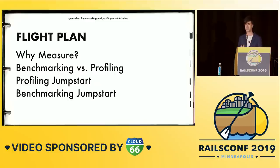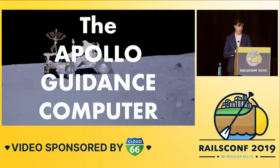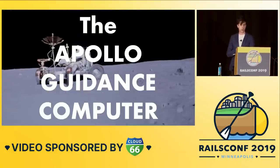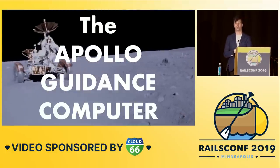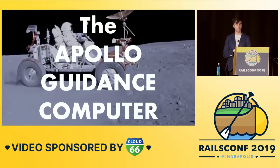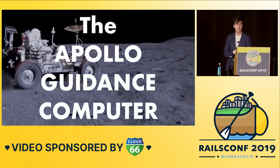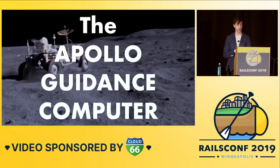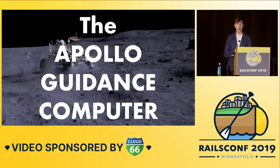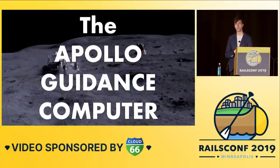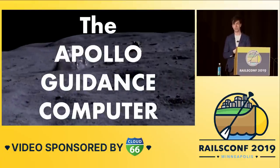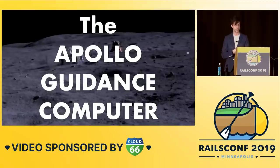And although this is RailsConf, nothing I'm going to be presenting here is specific to Rails. I want to begin with a story about one of the most famous computing projects of all time, the Apollo Guidance Computer, and how a performance bug almost caused an abort of the very first moon landing.